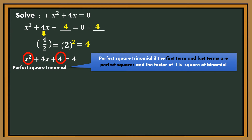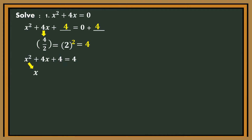And the factor of it is the square of a binomial. Get the square root of the first term, which is x, and get the square root of the last term, which is 2, then take the sign of the middle term and then square it. So we will have the square of quantity x plus 2 equals 4.